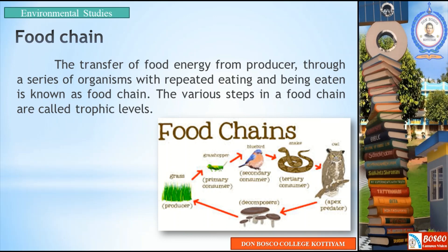Sunlight energy is used by producers. When you consume it, you will transfer it to the primary consumer — that means energy transfers to the secondary consumer, third consumer, and decomposer. This is a transfer of food energy. One producer is consumed by a consumer, and a consumer is consumed by a decomposer. This transfer of food energy from producers through different series of organisms is known as a food chain.